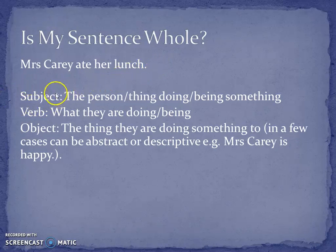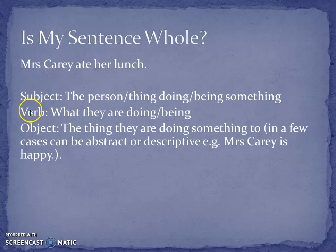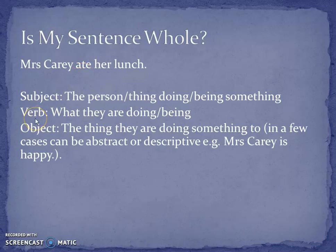The first ingredient is the subject — Mrs. Carey. The subject is the person who is doing whatever is being done in the sentence. The next ingredient is the verb. Mrs. Carey ate her lunch. The verb is the doing or being word.